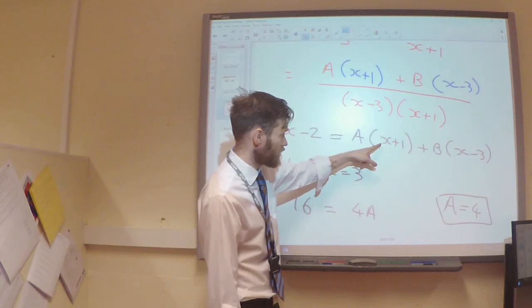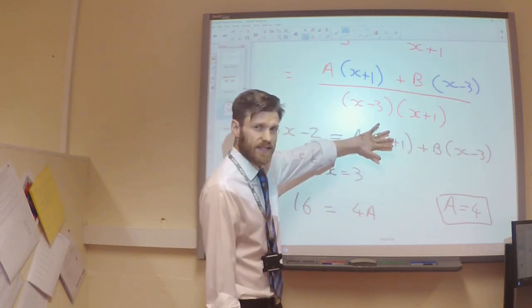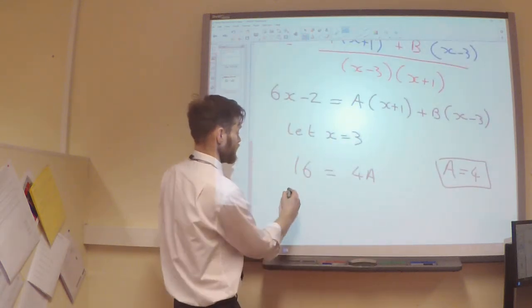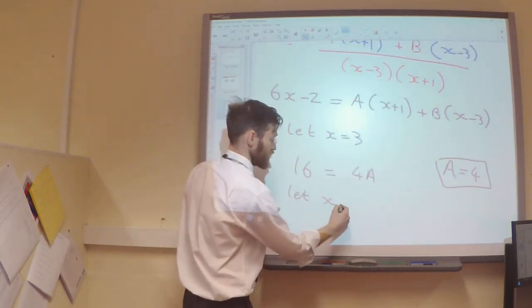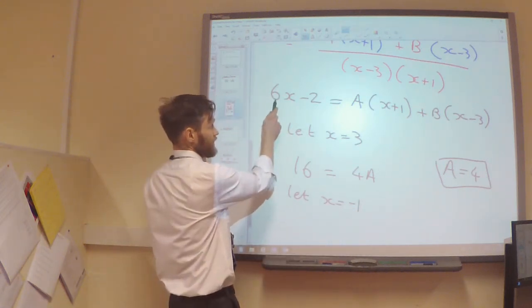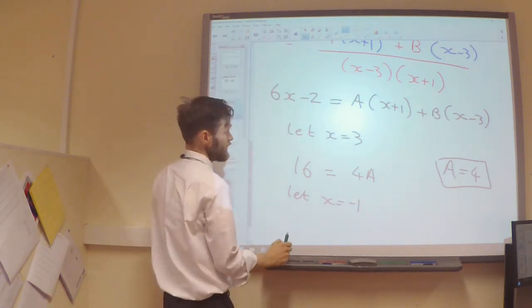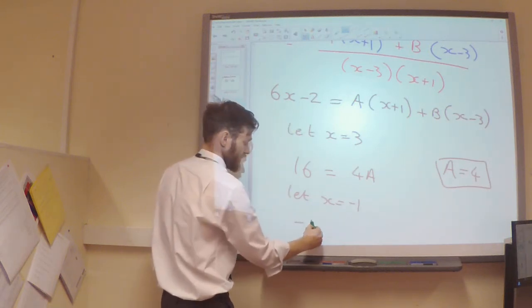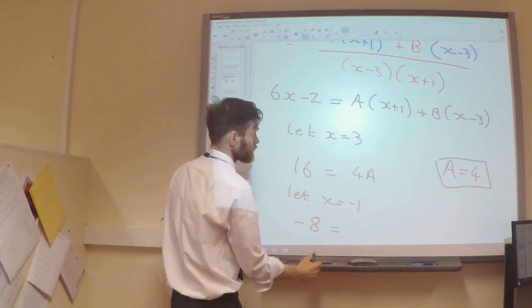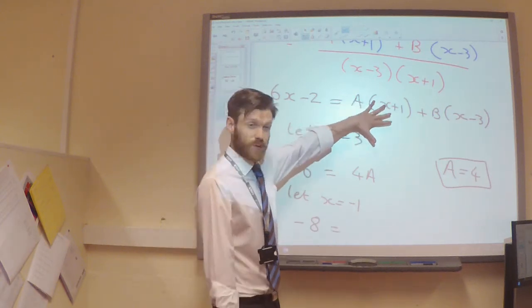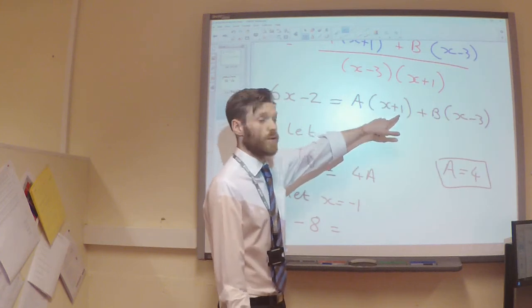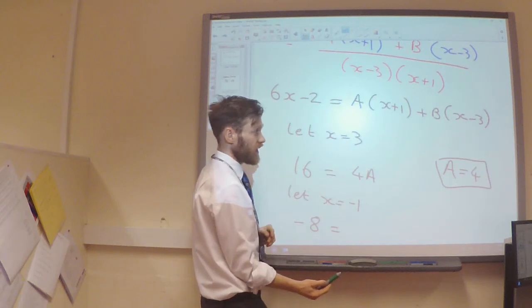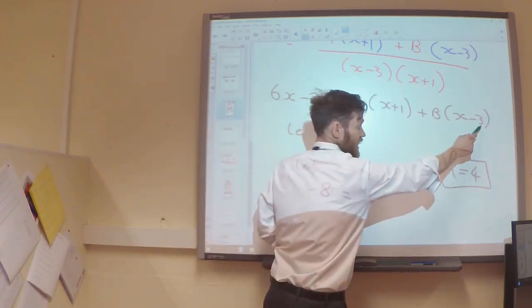Because when x is minus 1, minus 1 plus 1 will be 0, and this is going to disappear now. So, when x is minus 1, 6 times minus 1 is going to be minus 6. Subtract 2, so I will have minus 8. Over on the right hand side, this will disappear, because the minus 1 plus 1 will be 0.